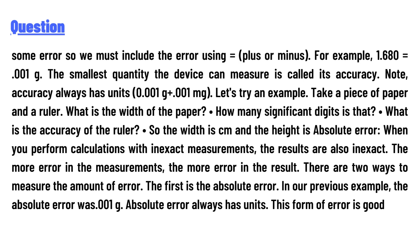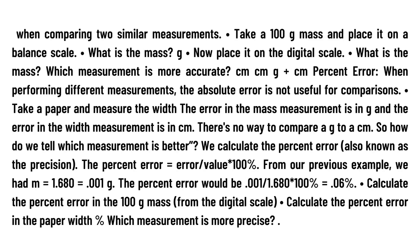When you perform calculations with inexact measurements, the results are also inexact. The more error in the measurements, the more error in the result. There are two ways to measure the amount of error. The first is the absolute error. In our previous example, the absolute error was 0.001 g. Absolute error always has units.